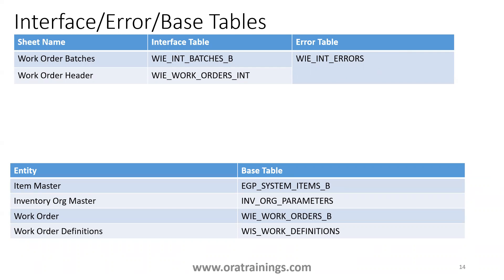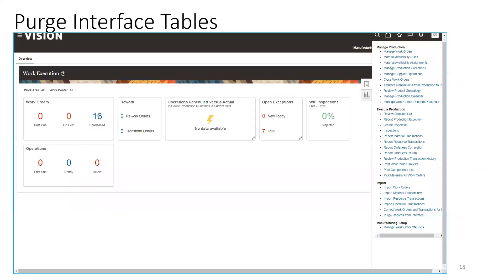Coming to the master detail data: item masters, inventory org master, and the work order base table — WI_WORK_ORDERS_B — which is the very important table we are discussing today. Also, work order definitions: as of now in our session, we are not discussing much on work order definitions, though your particular work order creation does depend upon the work order definitions.